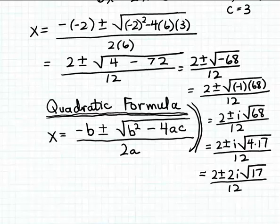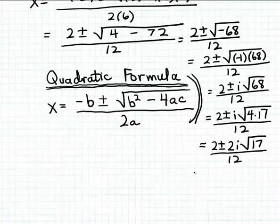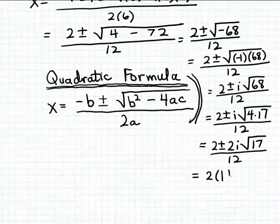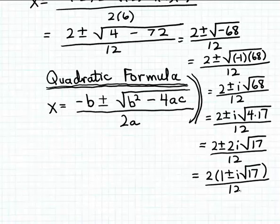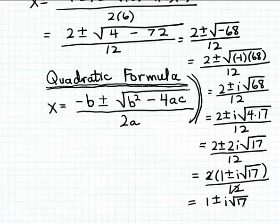We can't simplify the square root of 17, since 17 is a prime number. But we can continue simplifying by factoring 2 from both terms in the numerator, writing 2 plus or minus 2i times the square root of 17 as 2 times the quantity 1 plus or minus i times the square root of 17, over 12. Now we can divide 2 into 12, and we end up with 1 plus or minus i times the square root of 17, all over 6.